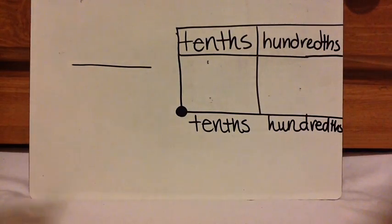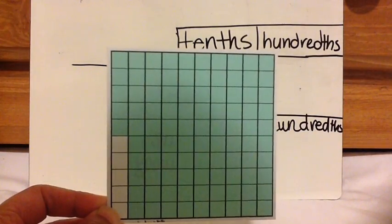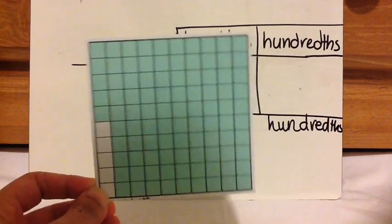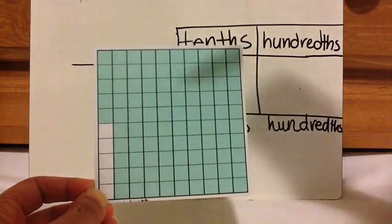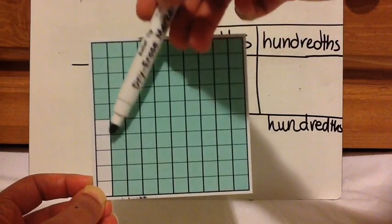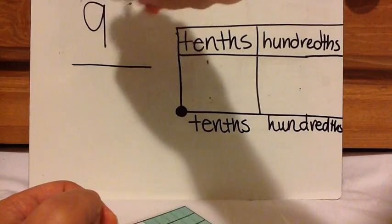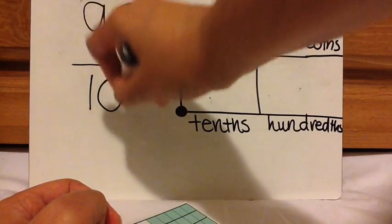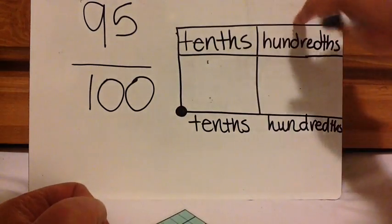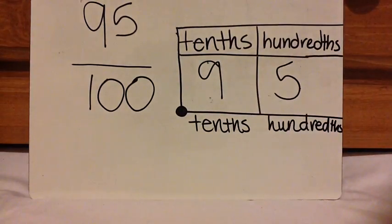Here is the next one. Press pause and then play when you're ready to check. When you count, there is ten, twenty, thirty, forty, fifty, sixty, seventy, eighty, ninety, ninety-one, ninety-two, ninety-three, ninety-four, ninety-five out of one hundred shaded in. So when you read this fraction, it's ninety-five hundredths. So I need to make sure I finish here when I write my number. Ninety-five hundredths.